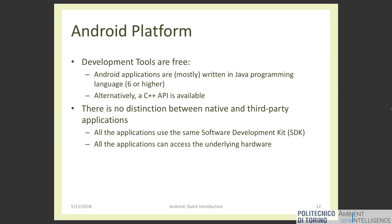When you install an application on your phone you typically receive a message saying: 'This application would like to use the camera' or 'This application would like to send messages — do you agree?' If you say yes, the application is installed. If you say no, the application is not installed.